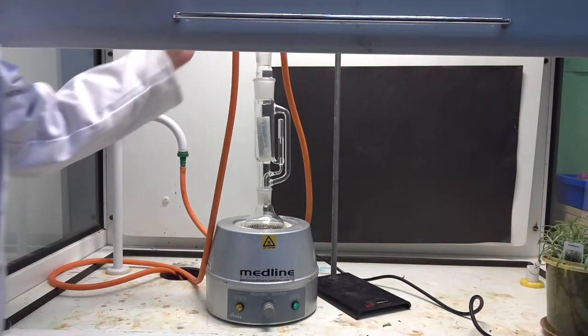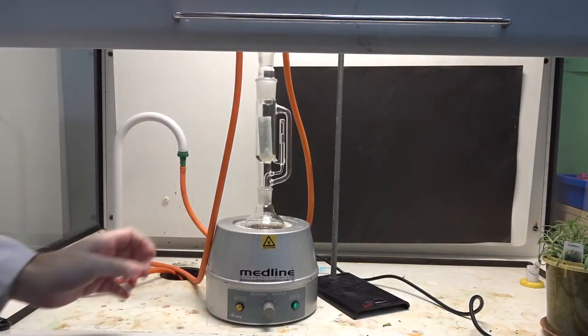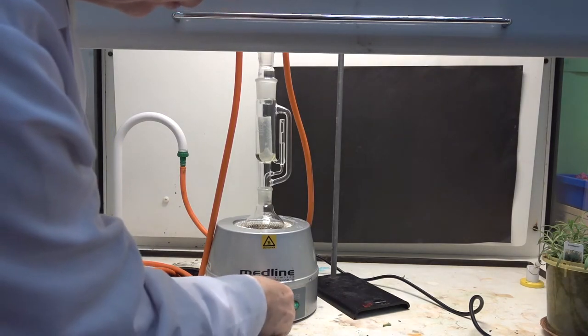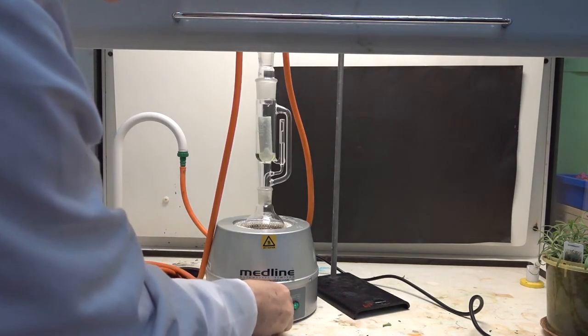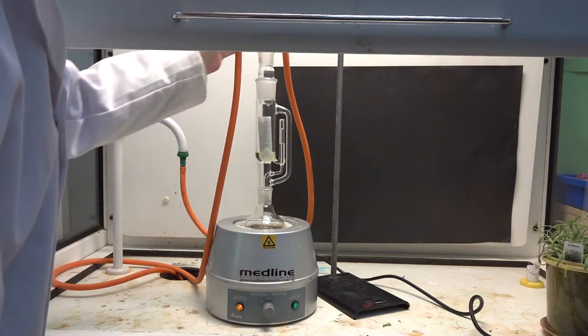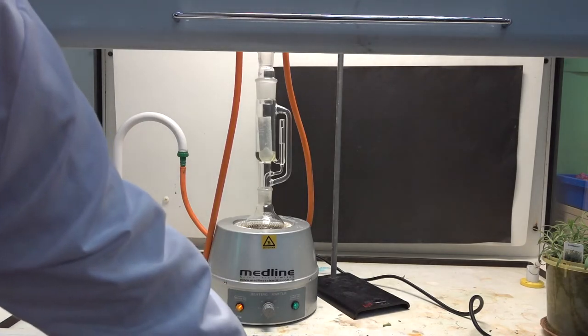So now we're ready to go. We've already put some anti-bumping granules. We just make sure it's nice and vertical and we'll turn the heating mantle on. And we also need to turn the fume cupboard on. It's quite loud, there's nothing we can do about that.